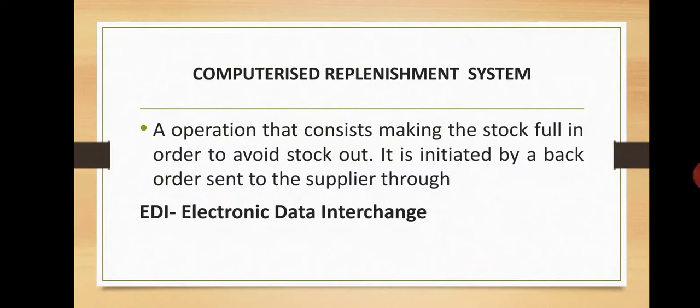When you have reached the order limit, automatically an email or message is generated to your supplier so that he has to send materials to keep your stock replenished. You set the order limit, and once the inventory reaches that order limit, it automatically generates an email to your supplier to send inventory. This is how Computerized Replenishment System and Electronic Data Interchange works.